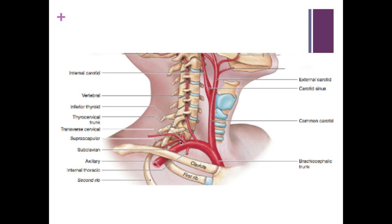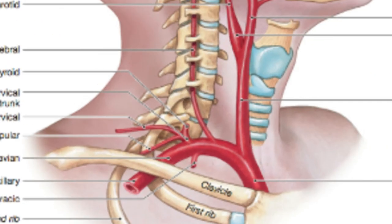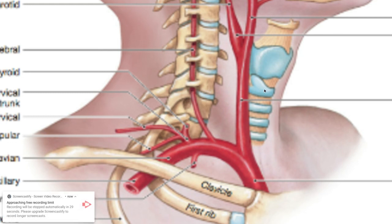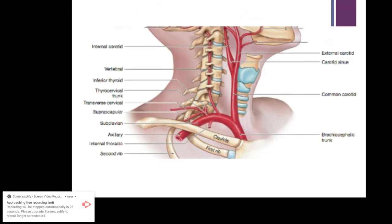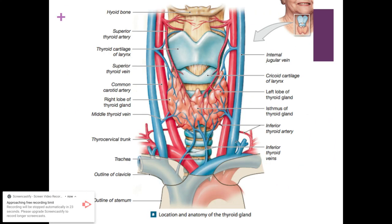Zooming in on the thyrocervical trunk — the trunk is just the short portion before it splits off. The inferior branch is the suprascapular artery, the middle branch is the transverse cervical artery, and the last branch is the inferior thyroid artery, which travels all the way around to the bottom of the thyroid gland.